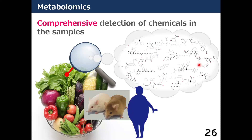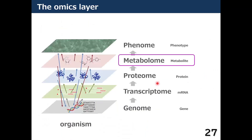Metabolomics is a technology for comprehensive detection of chemicals in samples. Metabolomics is placed at the 1st–4th level of the omics layer.